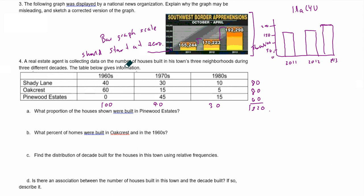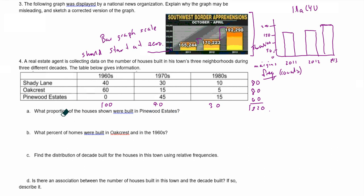Now let's look at our two-way table. Real estate agents collected data on the number of houses built in a town across three neighborhoods during three different decades. We have our margins here — these are called frequencies, because those are counts. They're in the margins of our two-way table. What proportion of houses shown were built in Pinewood Estates? We look at 60 divided by 220.